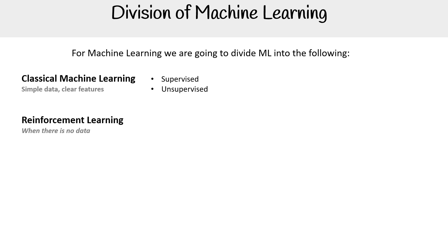Then you have reinforcement learning — this is when there is no data, and the idea is that the model is going to, through trial and error, figure out what is the right thing to do. This is where we have real-time decision making, game AI — like an ML model playing Mario or Sonic, failing again and again until it can pass the game — learning tasks, or robot navigation like autonomous driving vehicles.